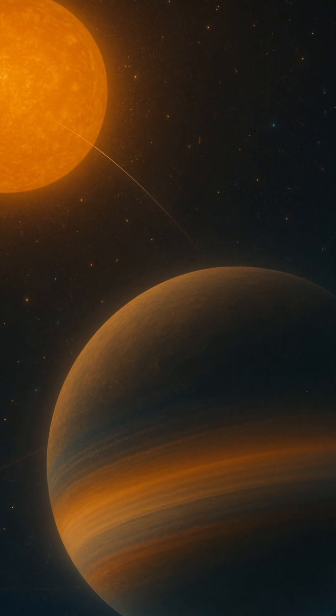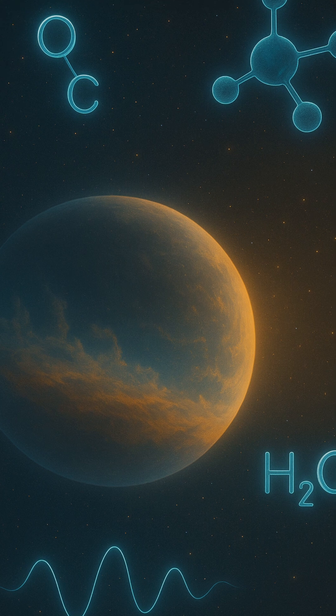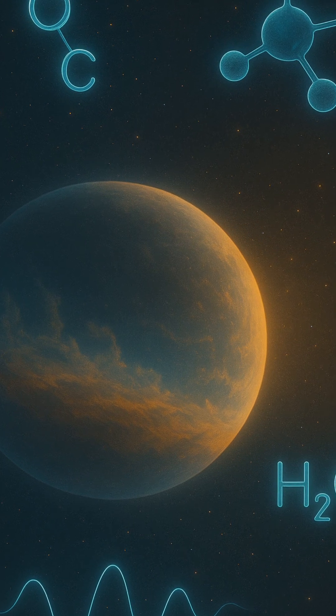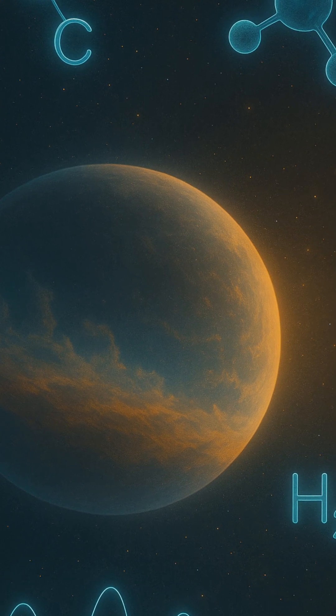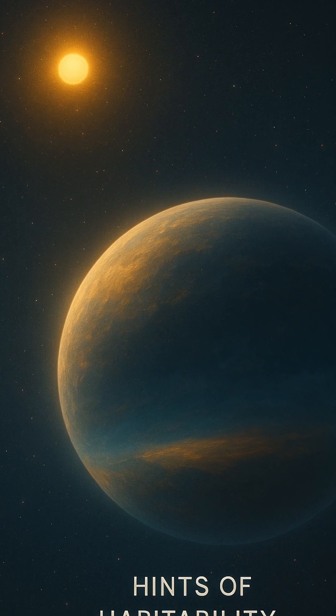Each molecule paints a clearer picture of the planet's chemical makeup. Some signatures suggest clouds and haze, while others hint at weather systems or volcanic activity. In a few rare cases, signs of water and stable temperatures have pointed toward potentially habitable conditions.